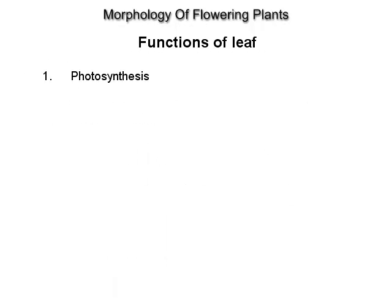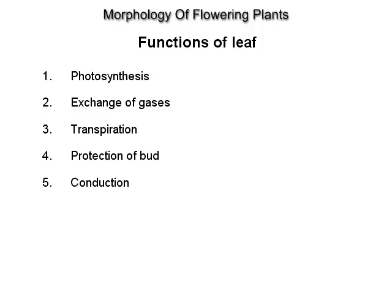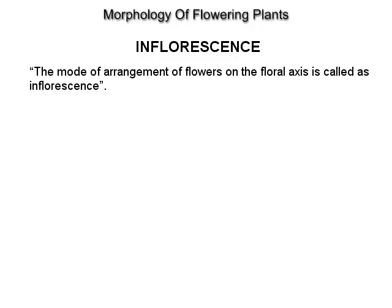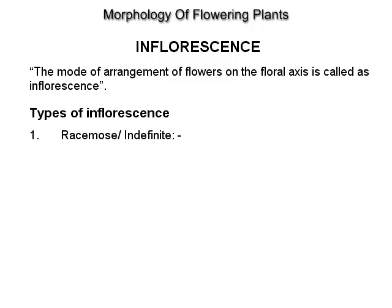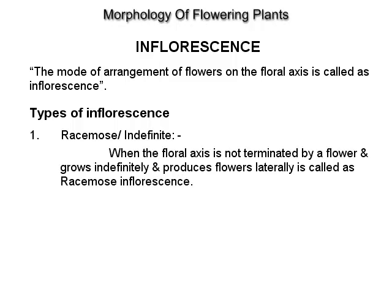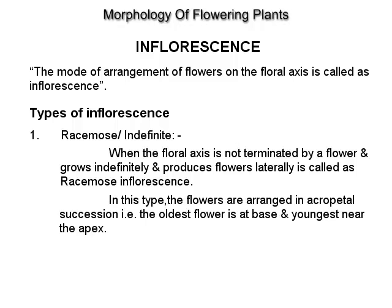Functions of leaf: photosynthesis, exchange of gases, transpiration, protection of bud and conduction. Inflorescence: the mode of arrangement of flowers on the floral axis is called inflorescence. Racimose or indefinite inflorescence: when the floral axis is not terminated by a flower and grows indefinitely and produces flowers laterally, it is called racimose inflorescence. In this type, the flowers are arranged in acropetal succession — the oldest flower is at the base and the youngest is near the apex, example Caesalpinia and gulmohar.